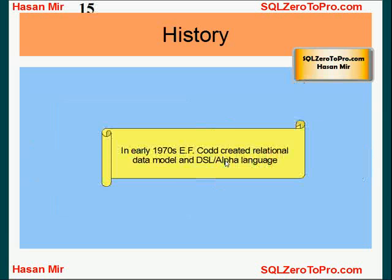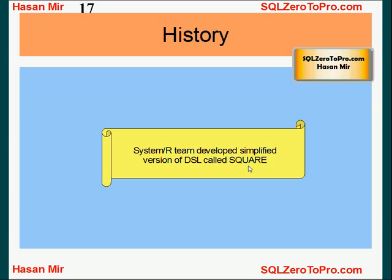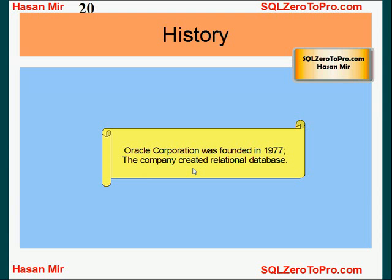Each company would have their own standard and that was causing problems. In 1970, a scientist called EF Codd — he was an IBM scientist — realized this problem and tried to standardize things. He created a data model and a language. The data model defined how to store data in a standard fashion, and the language was called DSL-alpha. Then IBM saw a profitable opportunity and created the System R project to leverage Codd's findings. The System R team simplified the language, and the language formerly called DSL was now called SEQUEL. SEQUEL was later changed to SQL, and SQL is still called SQL today — SQL and SEQUEL are synonymously used terms.